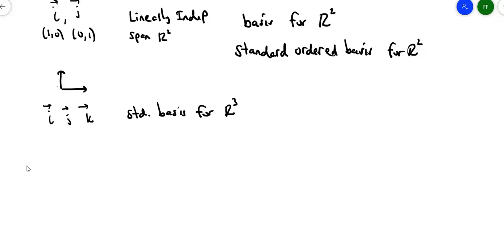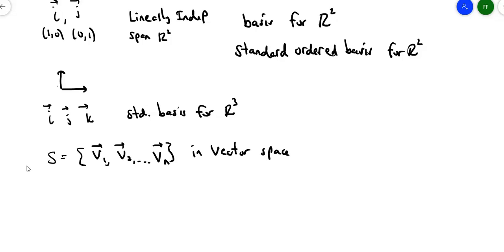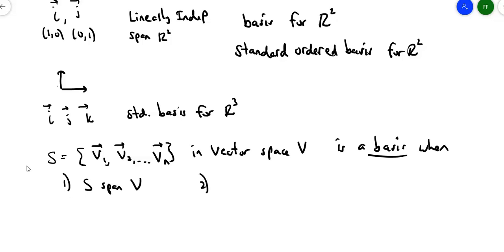But first, let's define a basis. Suppose I have a set of vectors {v1, v2, ..., vn} in a vector space V. That set is a basis when two things are true: first, the set has to span that vector space; and second, S has to be linearly independent. If both of those things are true, then it's a basis.